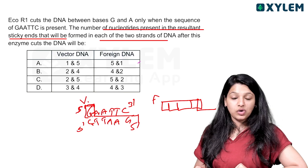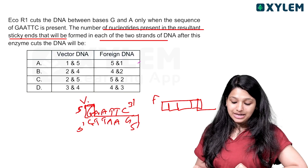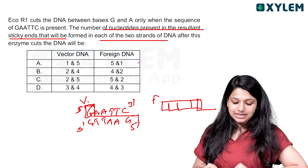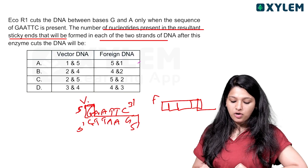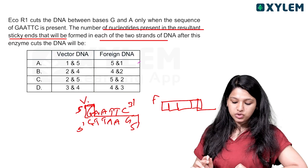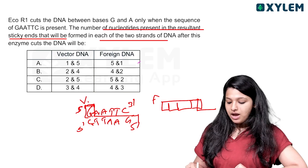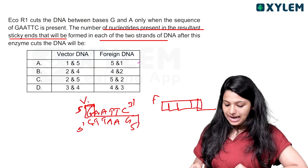The number of nucleotides present in the resultant sticky end that will be formed in each of the two strands of DNA — this applies to the foreign DNA.